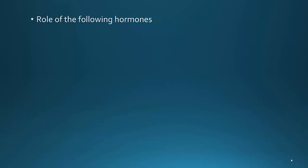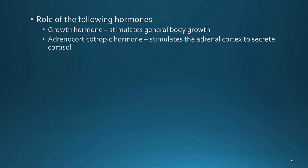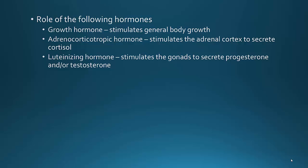You need to know the role of the following hormones — this is the last bit on your review. Growth hormone stimulates general body growth — you should not miss this question. Adrenocorticotropic hormone stimulates the adrenal cortex to secrete cortisol; this is important in the stress response, as cortisol is the stress hormone. Luteinizing hormone stimulates the gonads to secrete progesterone in females and testosterone in males.